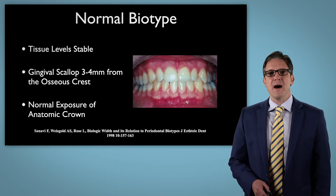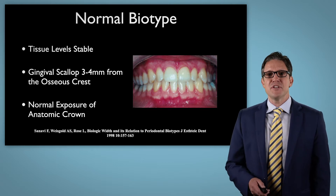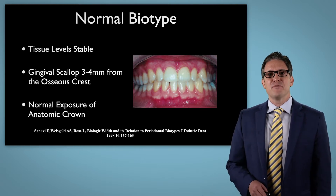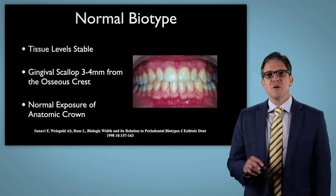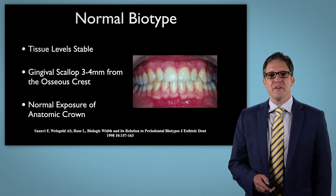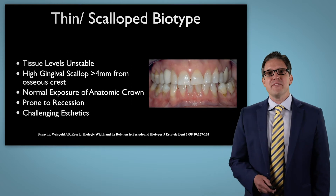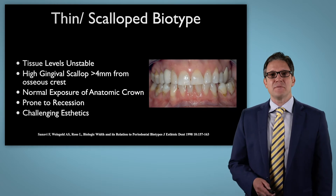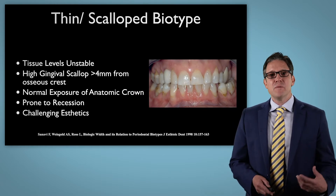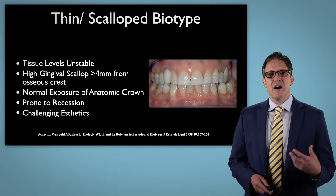For our normal tissue biotype, we have stable tissue levels. These stable tissue levels allow for a gingival scallop of about three to four millimeters around the osseous crest, which gives us a normal exposure of our anatomic crown.